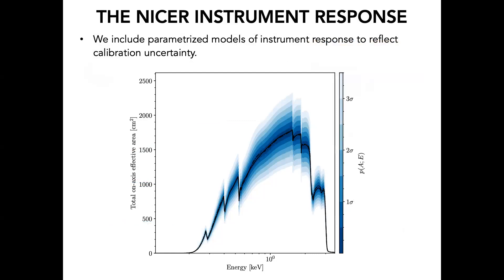Included in the model is something about how the instrument responds. NICER is perfect, of course, but our understanding of it is not. There is some uncertainty in how the instrument responds to an incoming signal and what the real effective area actually is. We actually include this uncertainty in our modeling, parameterizing it — it's most likely close to what the instrument team tells us, but could be a little bit further away — and we try and fit for that too.